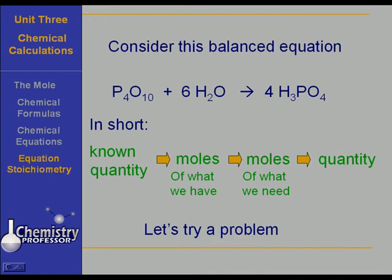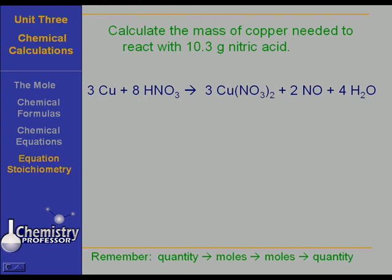Let's try a problem and see how it works. Let's calculate the mass of copper needed to react with 10.3 grams of nitric acid, assuming that everything is perfect. To find the mass of copper, we have to follow the pathway that I showed you using the mole to mole ratio. Look at the bottom of the page and you will see that I have an outline of the path of the calculation that we're going to use.